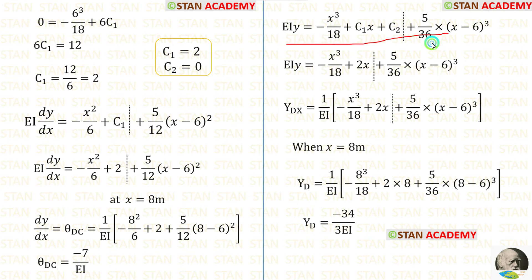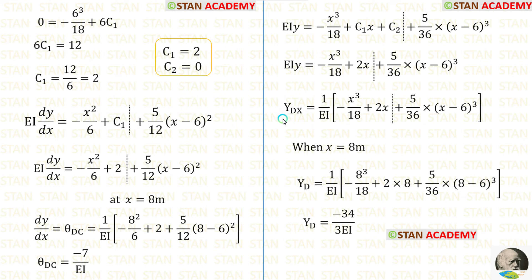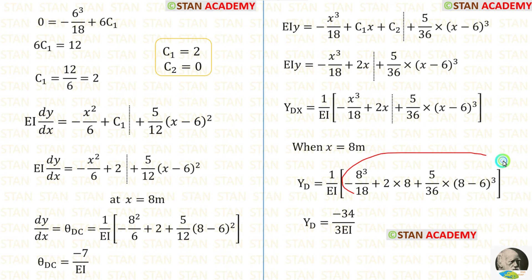In the deflection equation, let us apply the values of C1 and C2. Finally, we have formed an equation for Y(X). Then we have to find YD, the deflection at point D. We know that at point D, X = 8, so instead of X let us apply 8. After applying 8, we are getting YD.